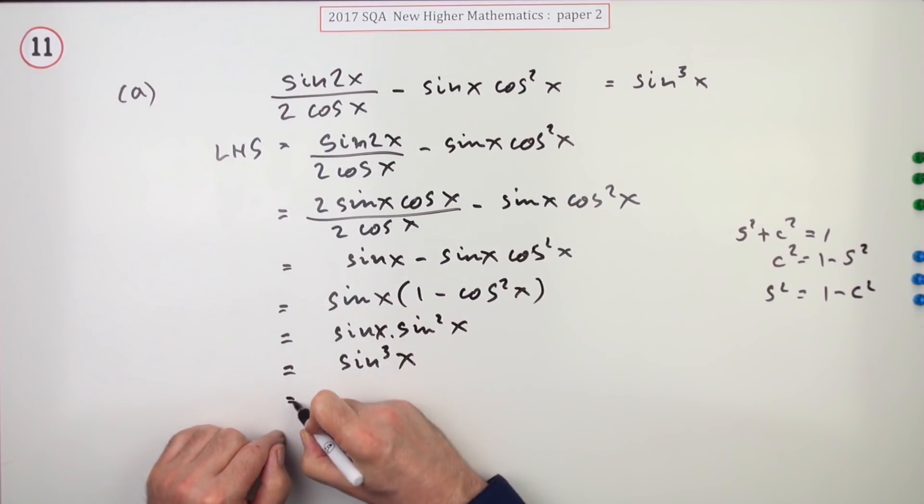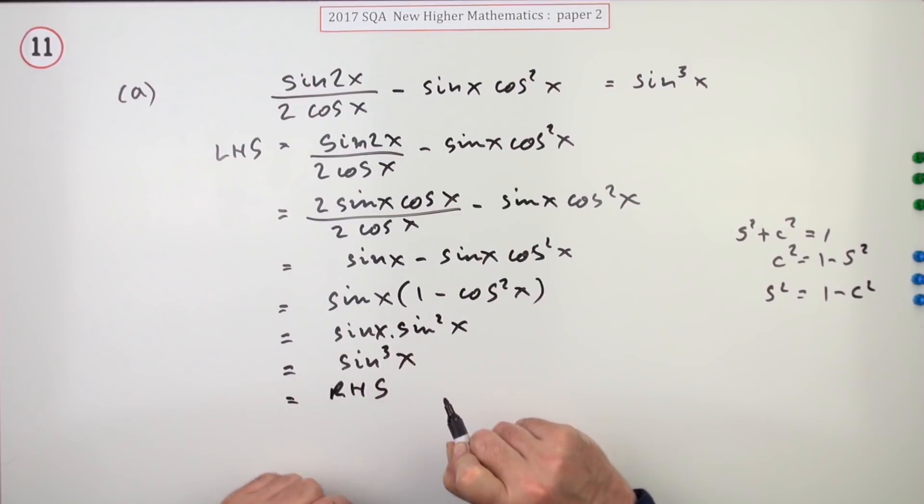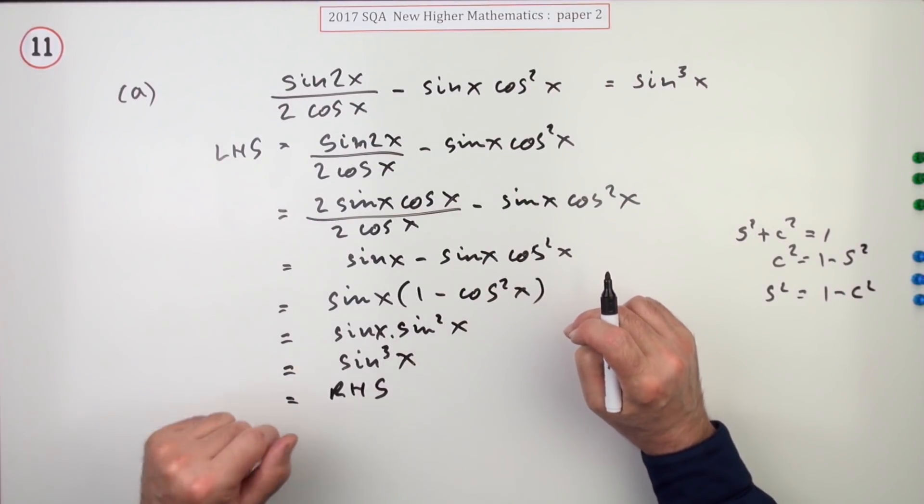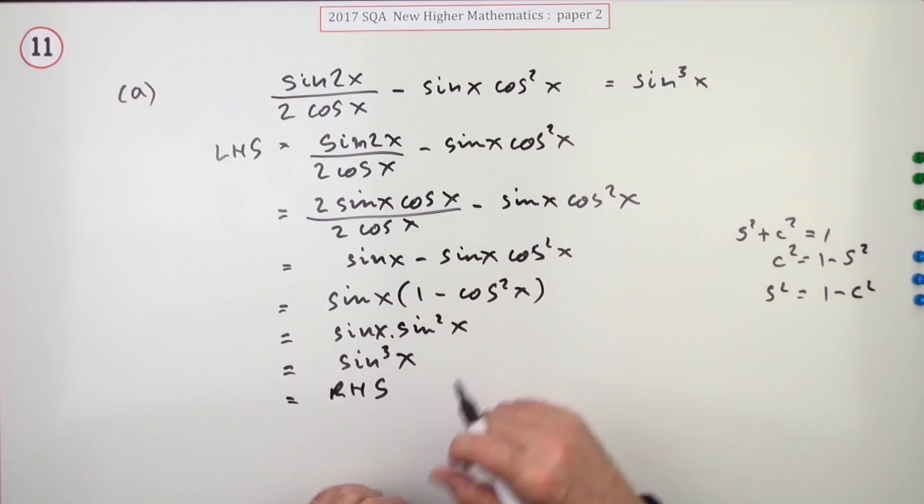Sine cubed x, which is the right hand side, although they don't seem to want you to specify that you've achieved the transformation apart from just getting the answer you need. And sometimes you finish that by saying as required, or if you want to go old school, you would say QED, that which was to be demonstrated.